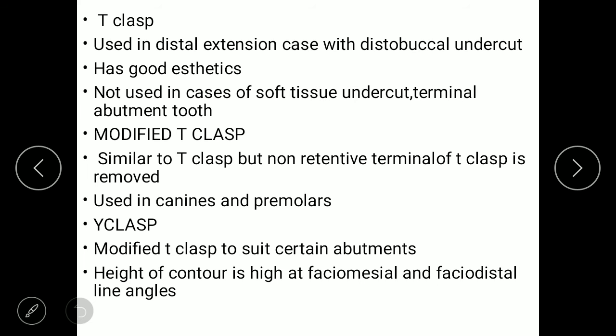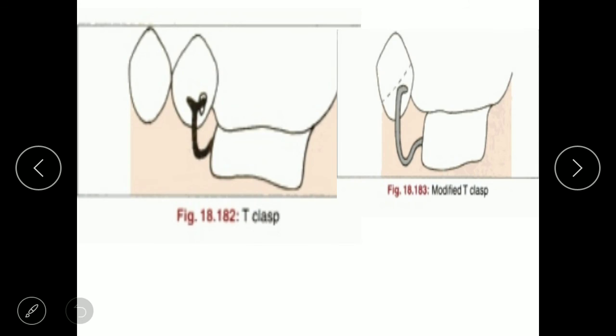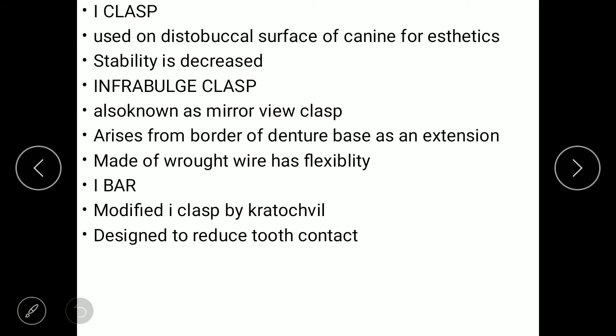The modified T clasp is used in canine and premolar regions. The Y clasp is a modified T clasp suited for certain abutments where the height of contour is high at the faciomesial distance and low at the faciodistal line angles. The I clasp uses the disto-buccal surface of the canine for aesthetic purposes only.